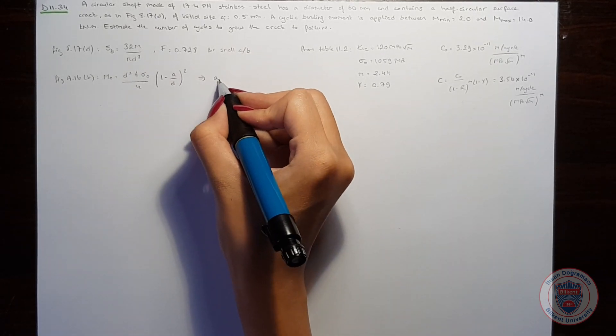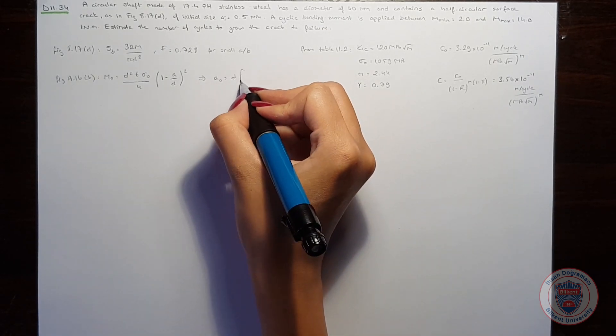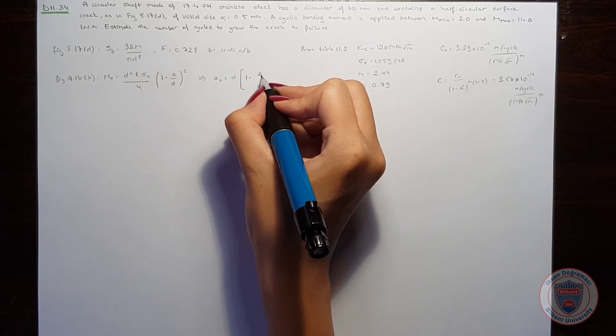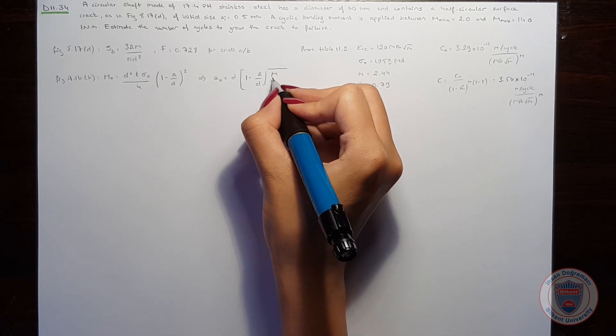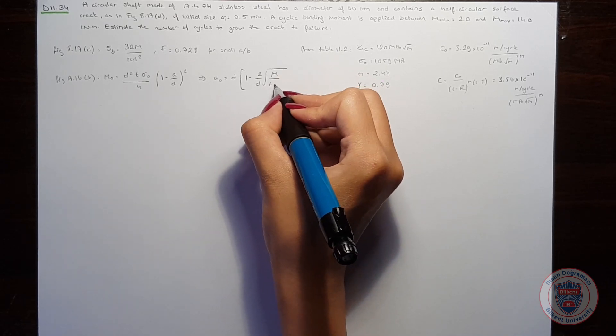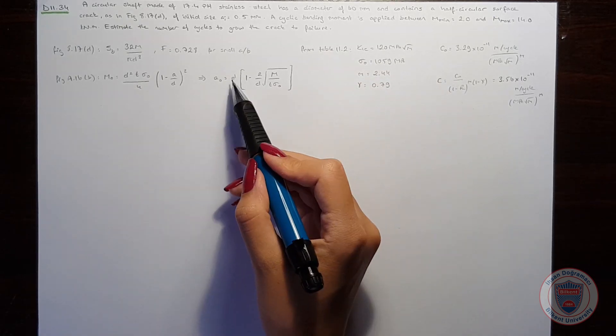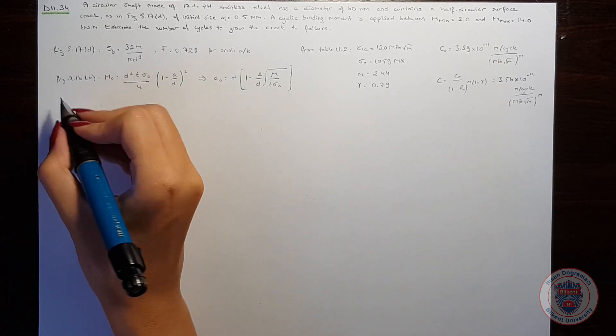And when we make some arrangements, we see that the crack length is d times (1 minus 2 over t times the moment) over (t times the yield strength). We know the data for these terms but we don't know the thickness, so to find t...